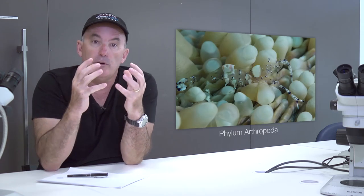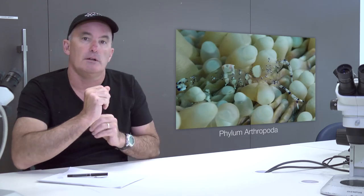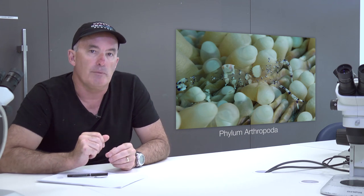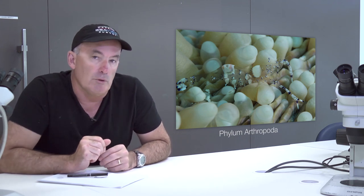The next major group of protostome invertebrates belong to the phylum arthropoda. The most important group of arthropods within tropical coastal ecosystems belongs to the subphylum crustacea.